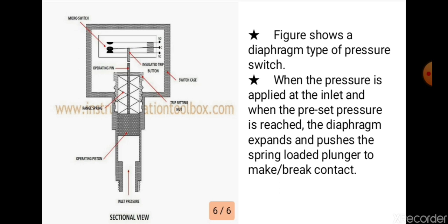In the pressure switch figure, inlet pressure acts on an operating piston or diaphragm region. The diaphragm drives the main shaft, which controls the open and close connections at the terminals — normally open and normally closed. The center portion is normally closed by default. Hydraulic pressure moves the diaphragm and main shaft to switch the contacts.